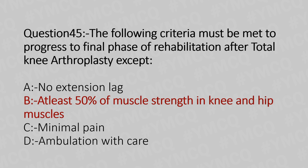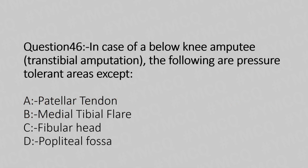Now let's move to question number 46. In case of below knee amputee, trans-tibial amputation, the following are the pressure tolerant areas except: Option A, vital attented. Option B, medial tibial flare. Option C, fibular head. Option D, popliteal fossa. And the answer is Option D, popliteal fossa.